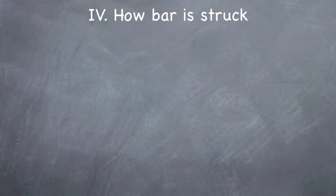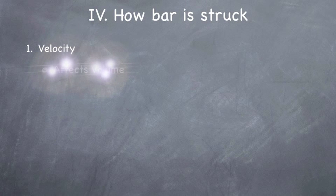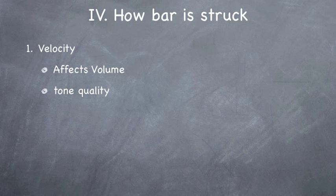Number four, how the bar is struck. Obviously the biggest factor is velocity because that's going to affect the volume of your stroke and it'll also affect the tone quality. For example, human hearing, we hear low volume tones differently than high volume tones. And also we have what's called multi-timbral mallets. So if you have a really loose mallet wrap, then when you're playing at a low velocity, you have a very smooth sounding hit. And then when you start playing at a higher velocity, it'll cut through to the core and you'll get more of a harsh sounding hit.